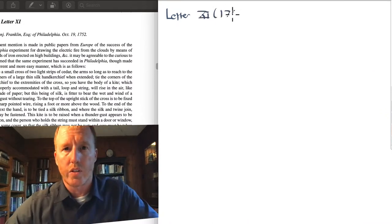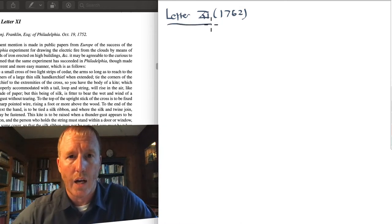So let's go ahead and take a look, first of all, at his letter number 11. In this letter, he describes his famous kite experiment, which is probably what Americans are most familiar with. So let's take a look at letter 11. And in this letter, by the way, this is published in 1752. In this letter, let's see if we can draw how he describes his kite.